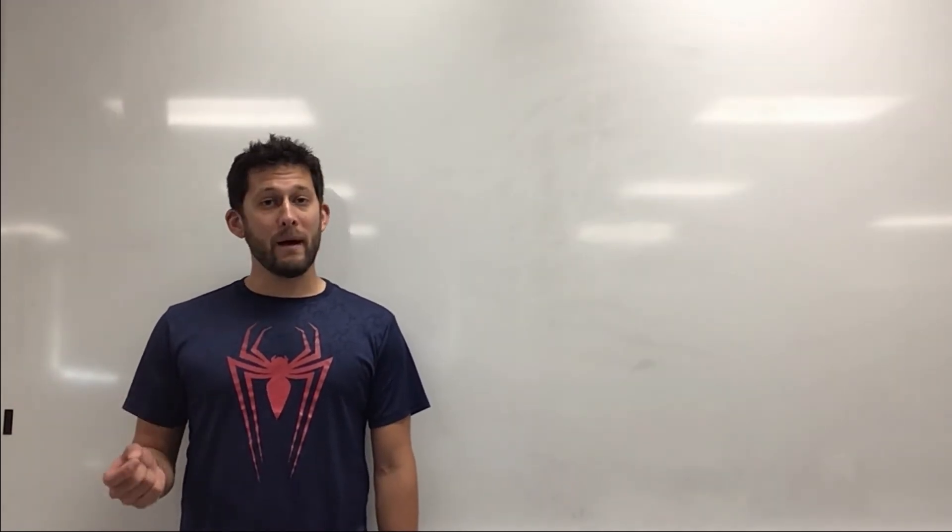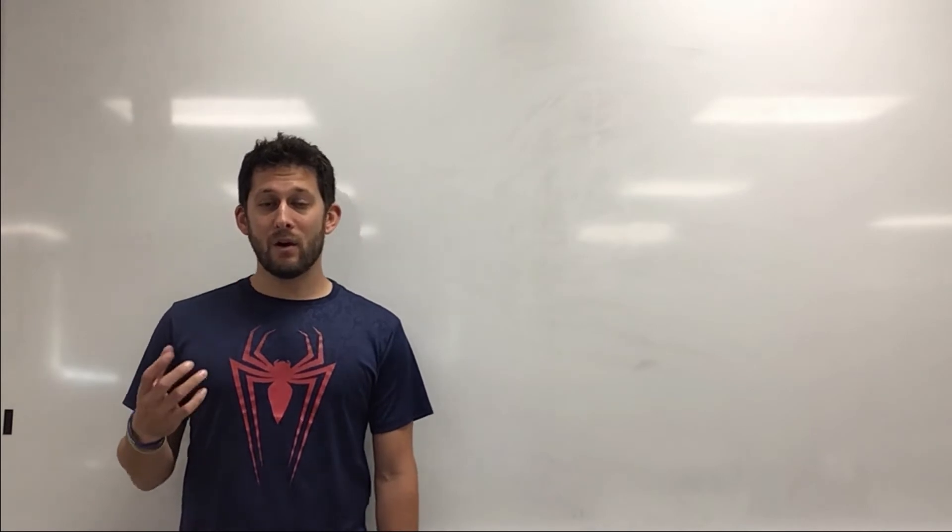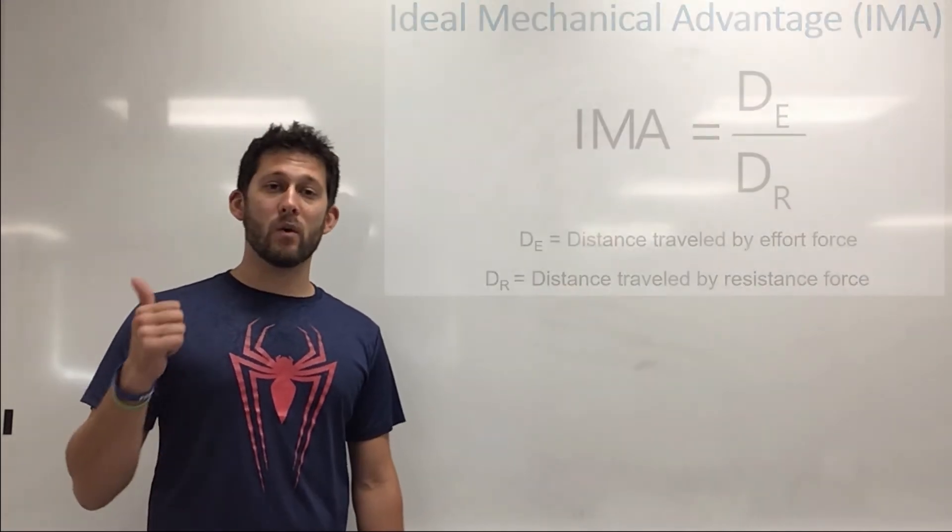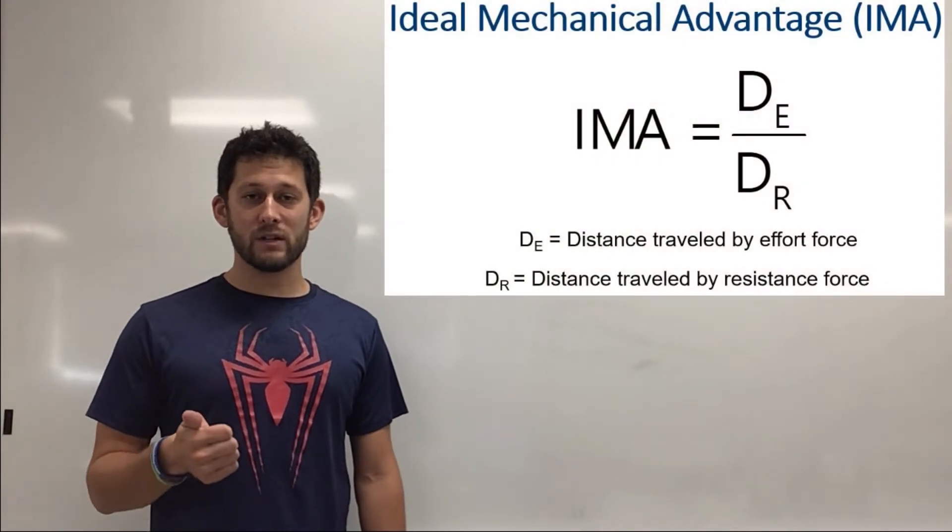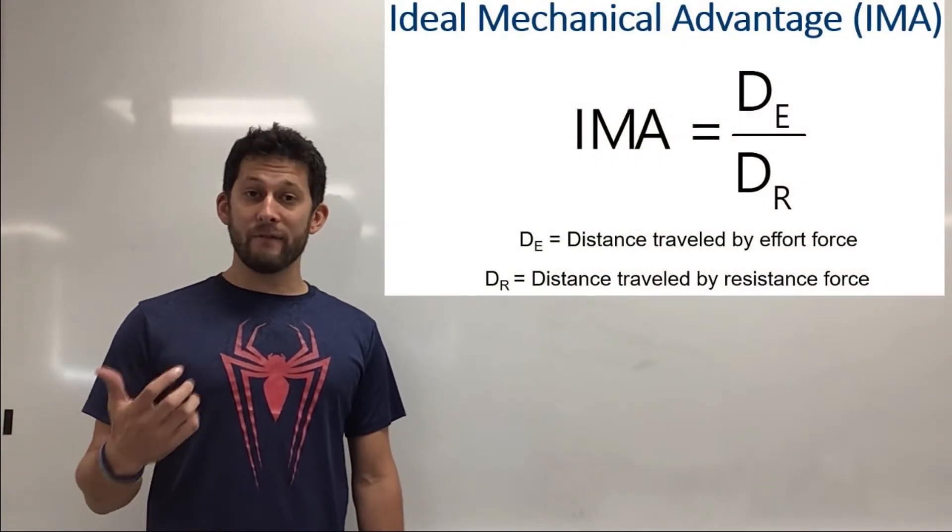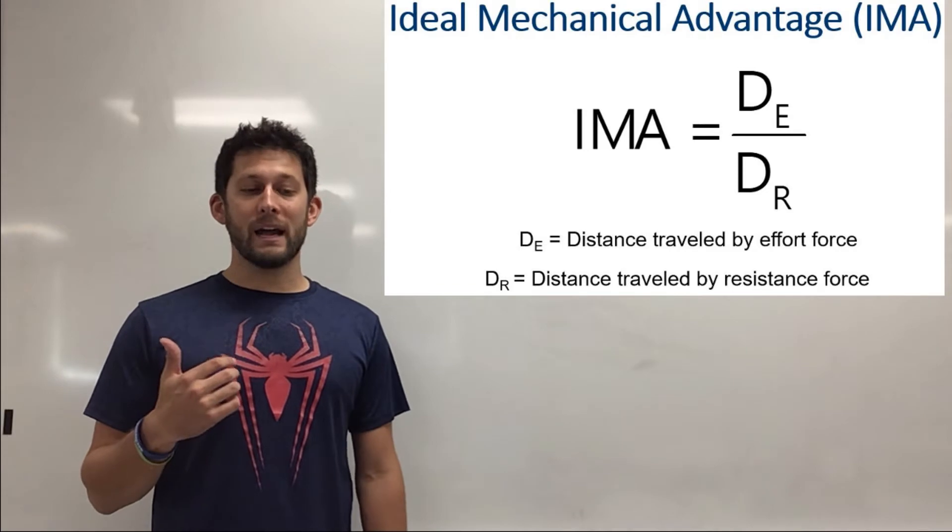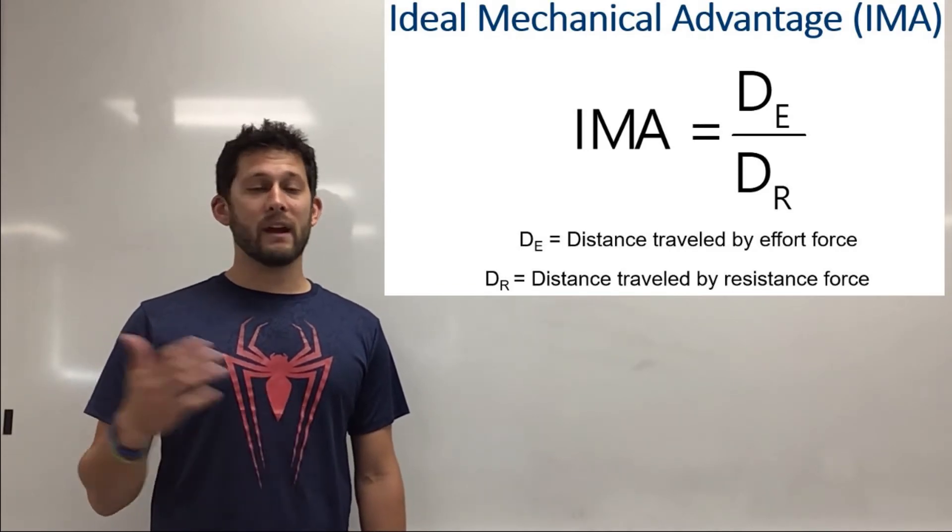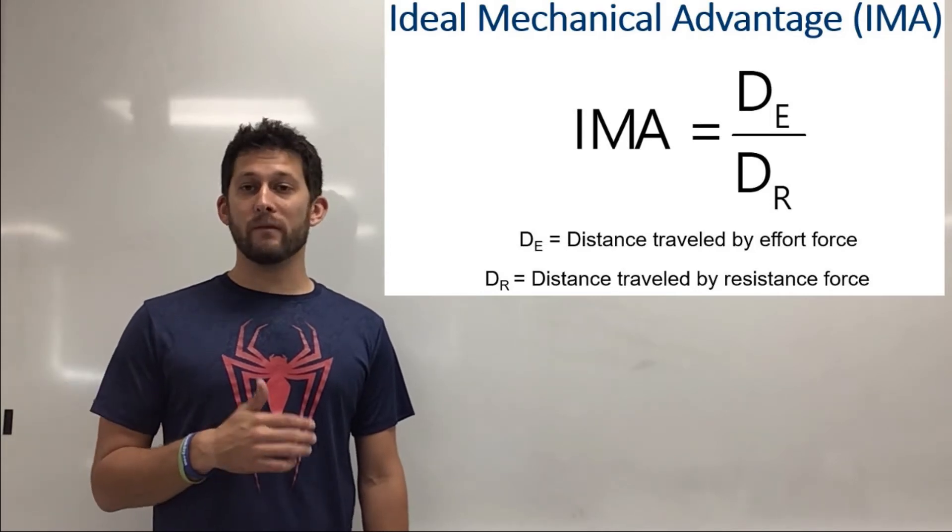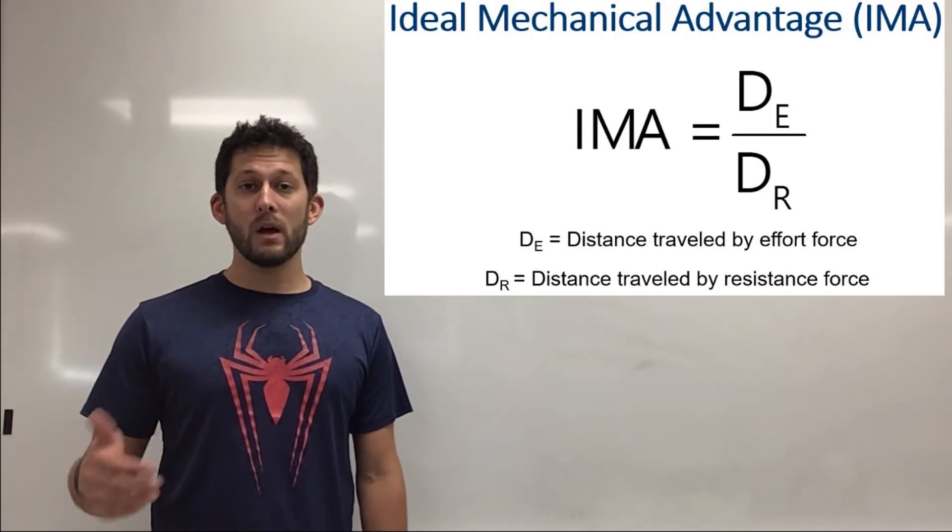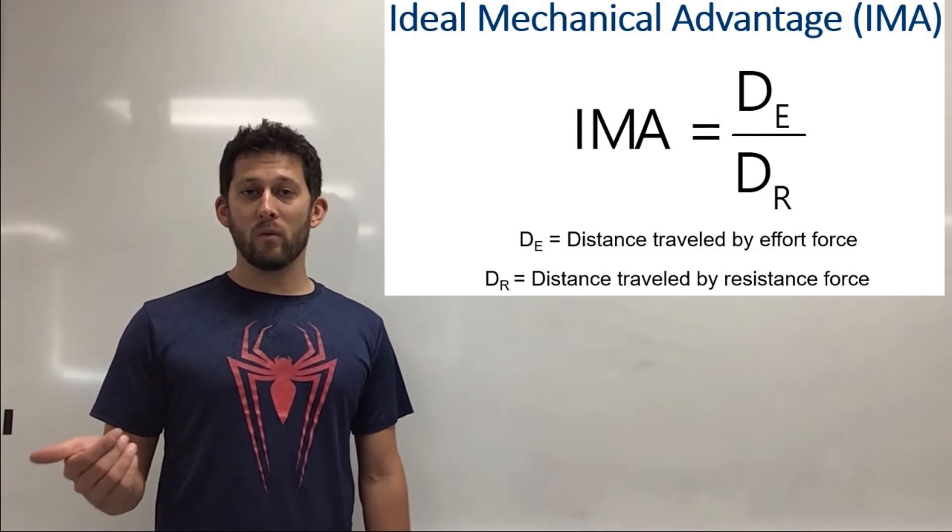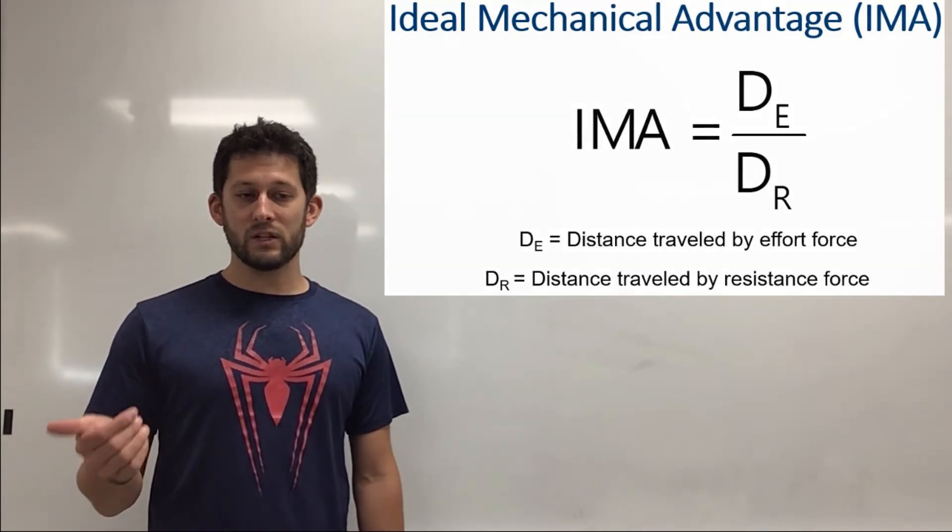And what that amounts to is the only measurements we really need are distances. So your ideal mechanical advantage is looking at the effort distance divided by the resistance distance. So we don't need to have any force calculations at all. We just measure parts of our simple machine and automatically know what the ideal mechanical advantage is.